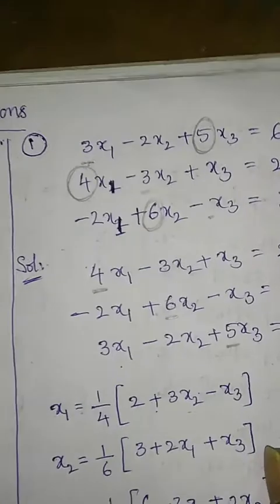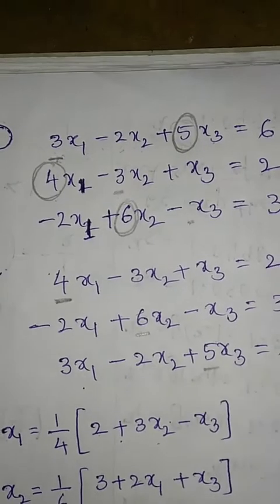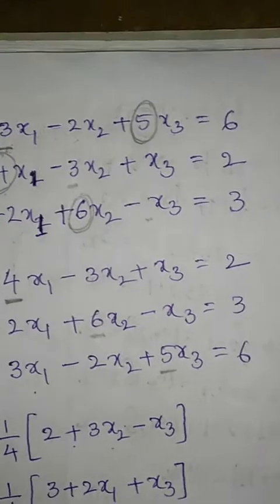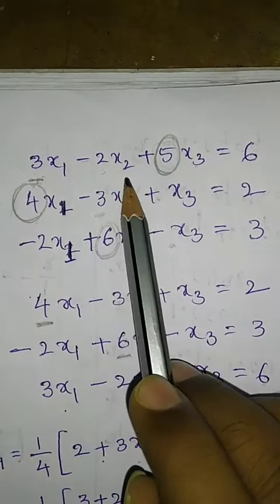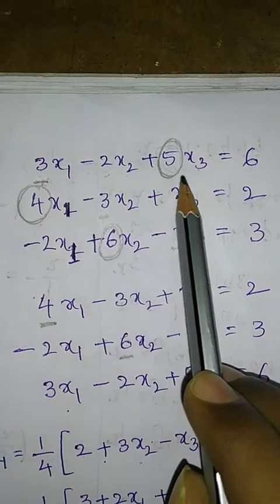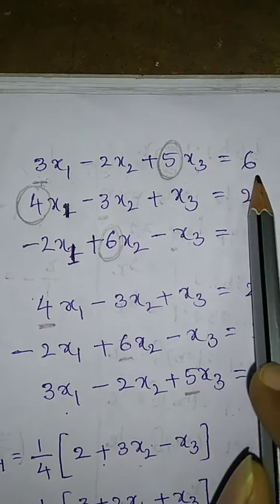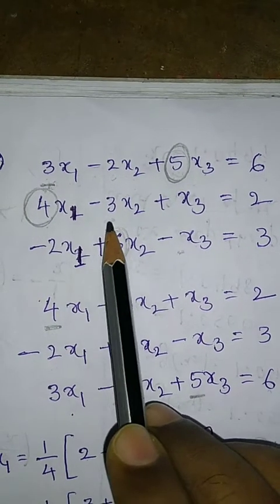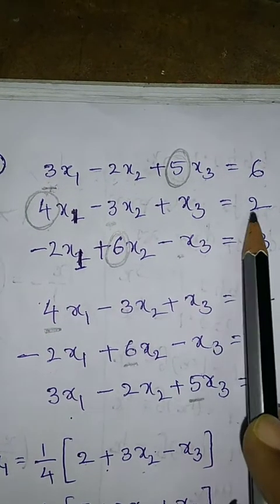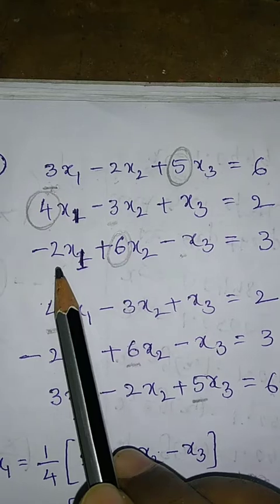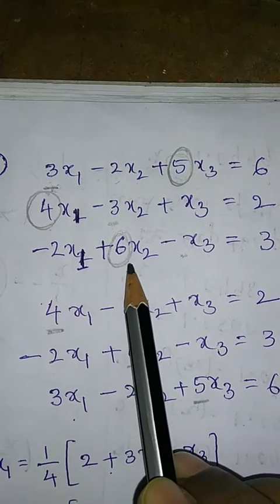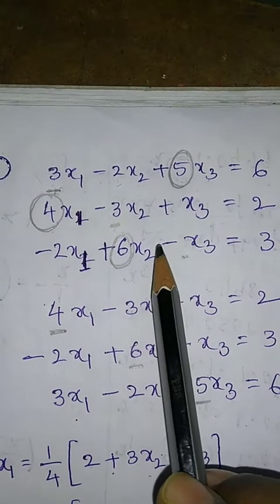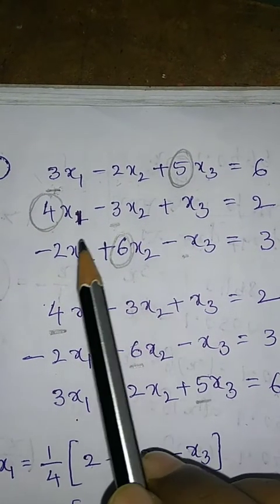For example, consider the system of equations: 3x1 minus 2x2 plus 5x3 equals 6; 4x1 minus 3x2 plus x3 equals 2; and minus 2x1 plus 6x2 minus x3 equals 3.